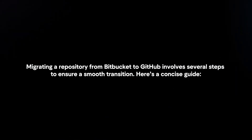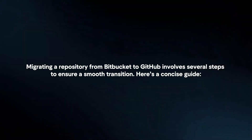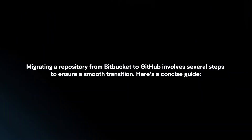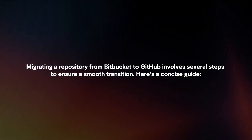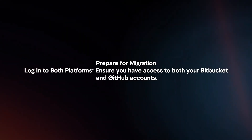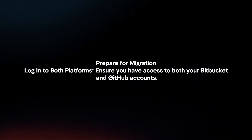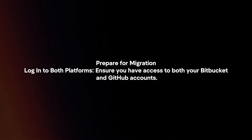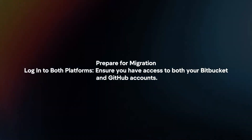Migrating a repository from Bitbucket to GitHub involves several steps to ensure a smooth transition. Here's a concise guide. Prepare for migration by logging in to both platforms — ensure you have access to both your Bitbucket and GitHub accounts.